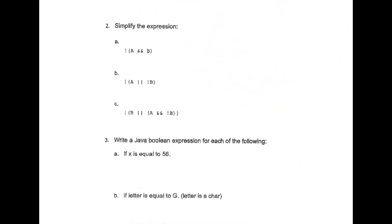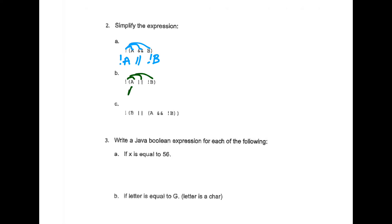Question two: simplify NOT(A AND B) using De Morgan's Law — apply the opposite to all three things. The opposite of A is NOT A, the opposite of AND is OR, and the opposite of B is NOT B. For NOT(A OR NOT B): the opposite of A is NOT A, the opposite of OR is AND, and the opposite of NOT B is just B.